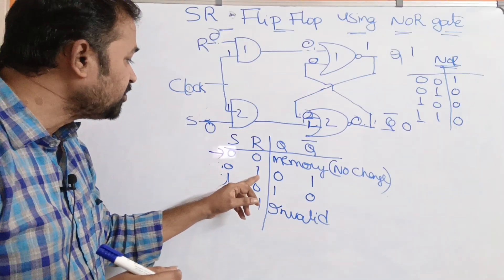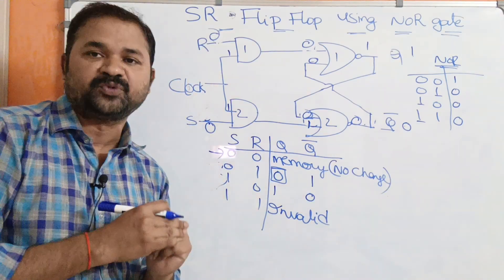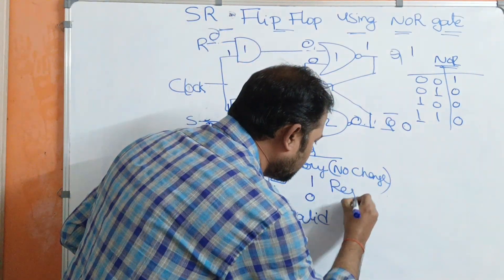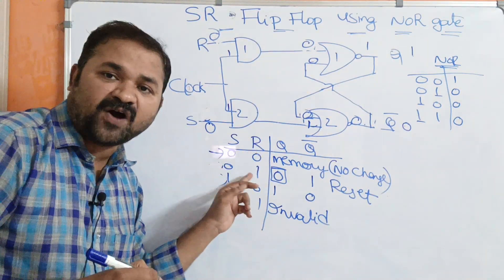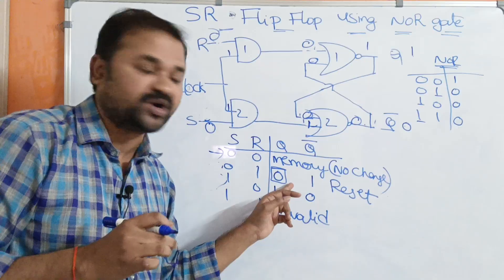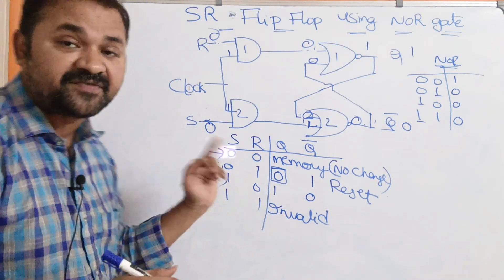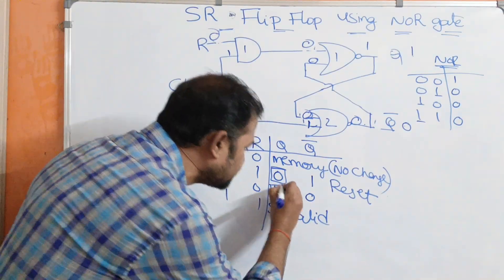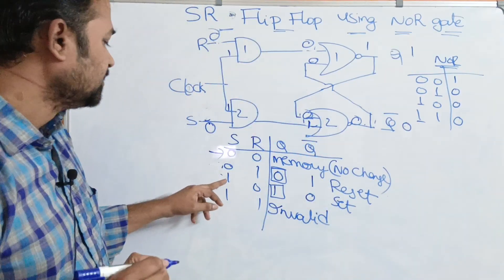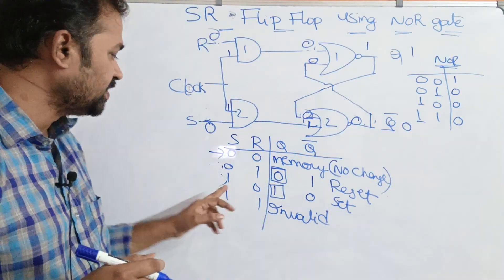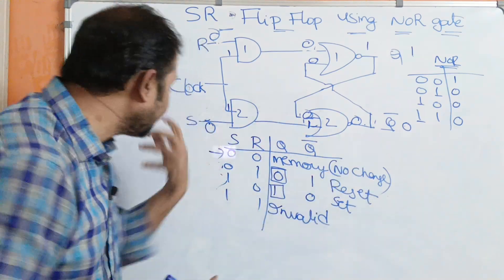So summarizing: if S=0 and R=0, the output is memory — there is no change in the output. If S=0 and R=1, then Q value is 0, which stands for reset. If R=1 then Q must be 0 — this is the reset output. If S=1 and R=0, then Q is 1, which stands for set — this is the set output.